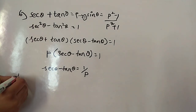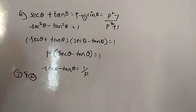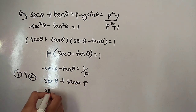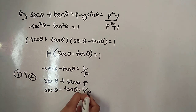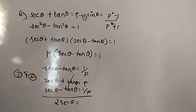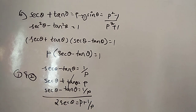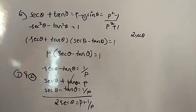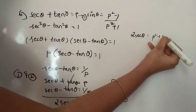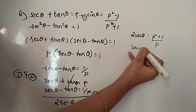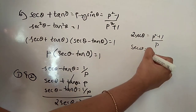Adding equations 1 and 2: 2 secant theta equals p plus 1 over p. Finding the LCM gives 2 secant theta equals (p squared plus 1) over p. Therefore secant theta equals (p squared plus 1) over 2p.